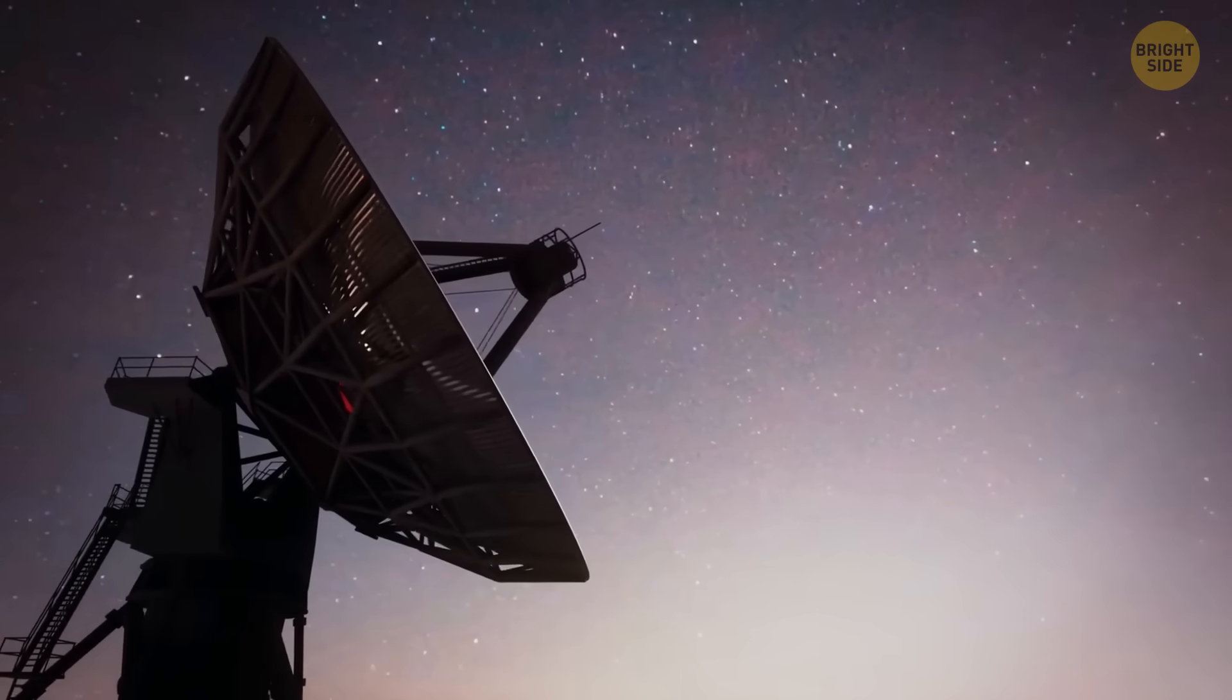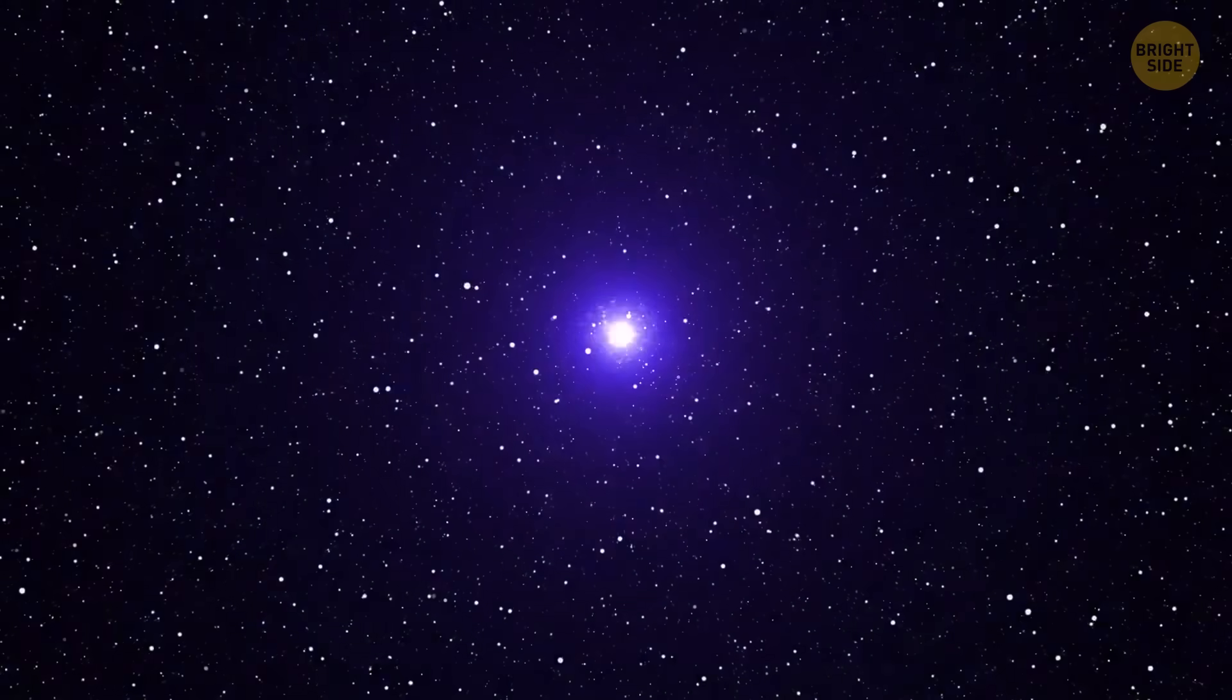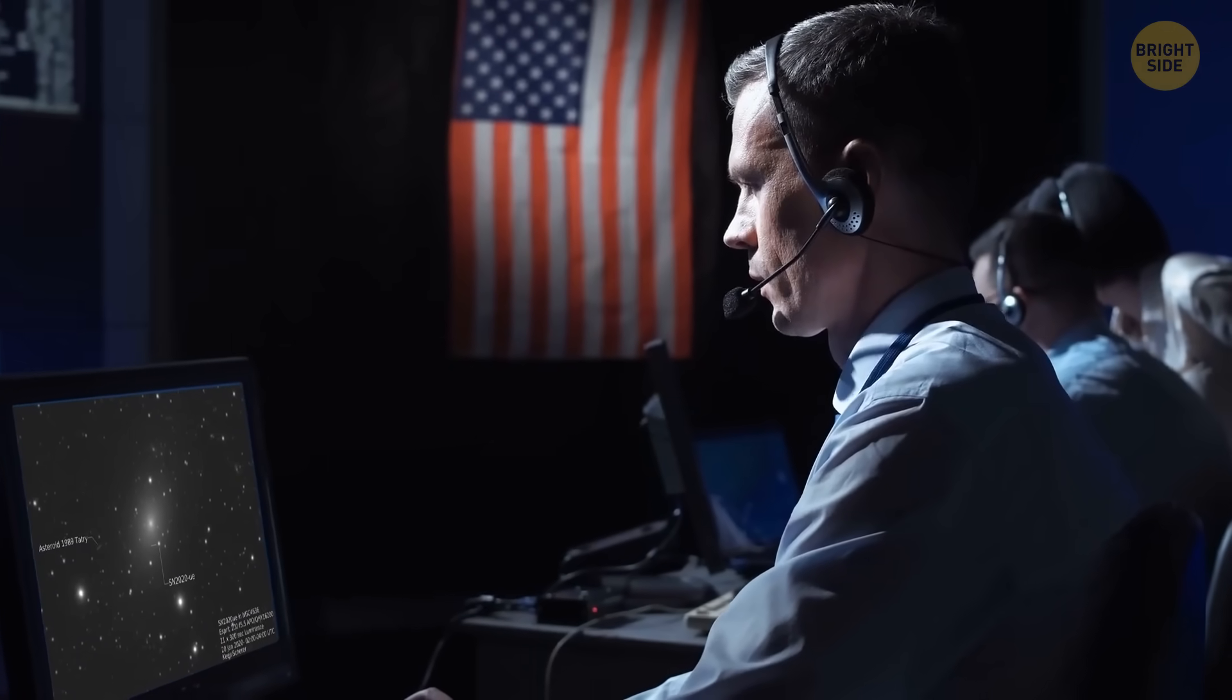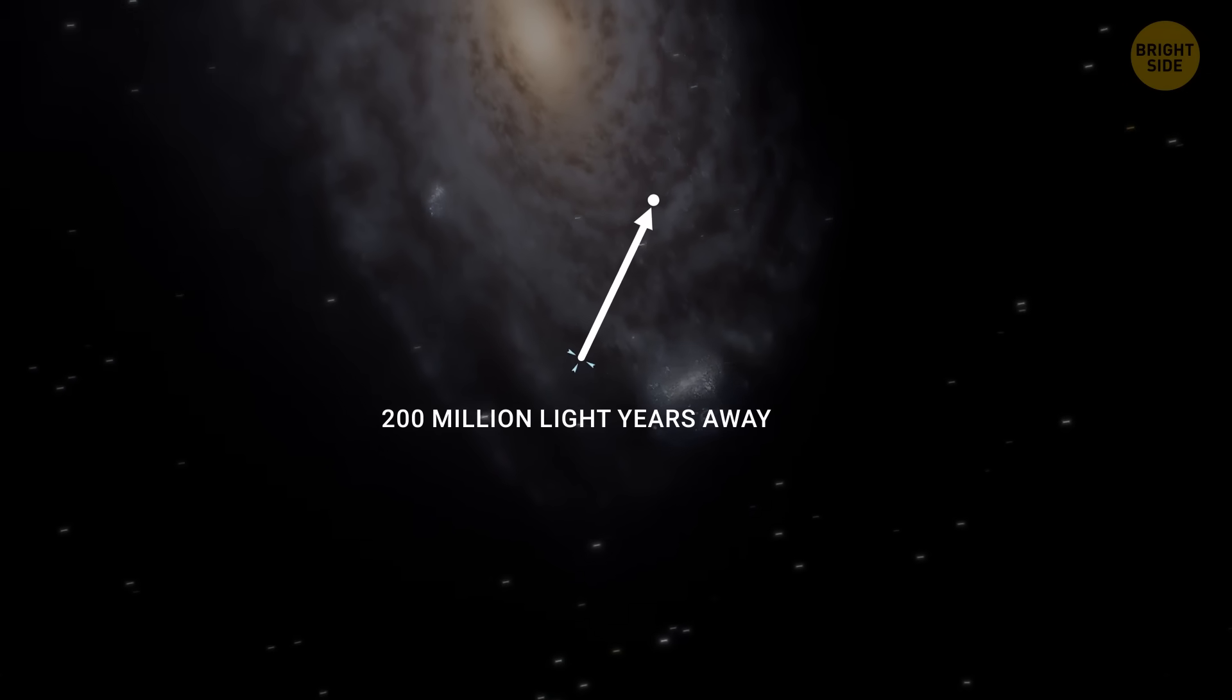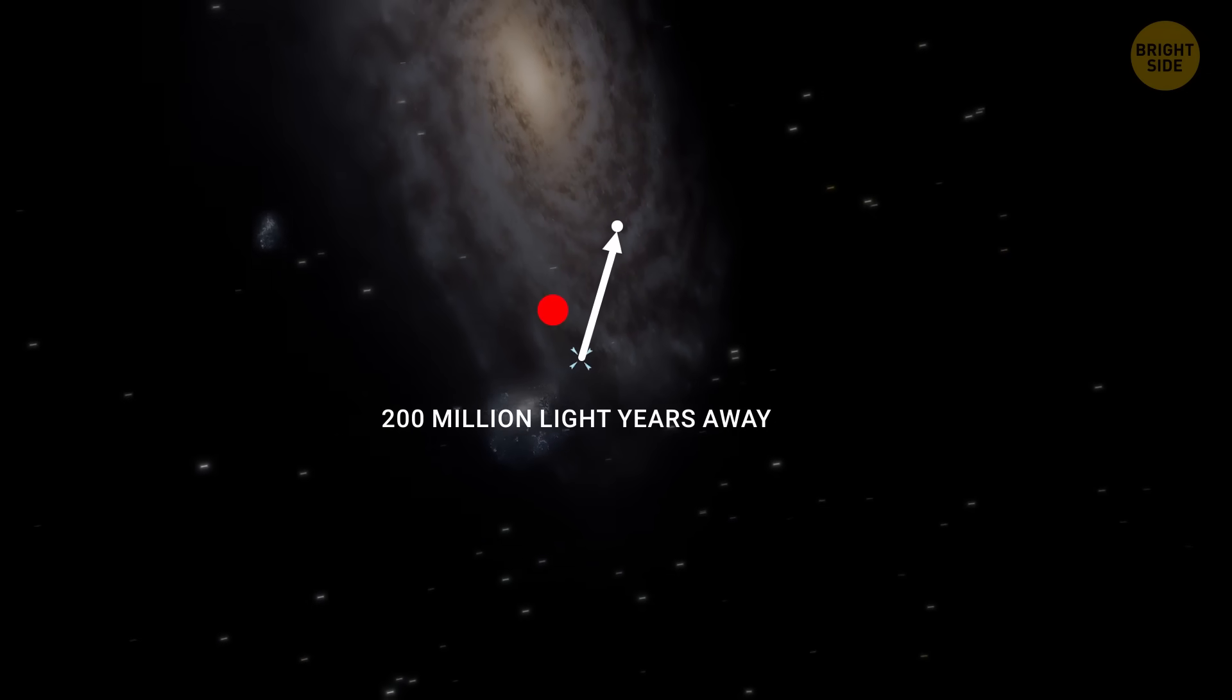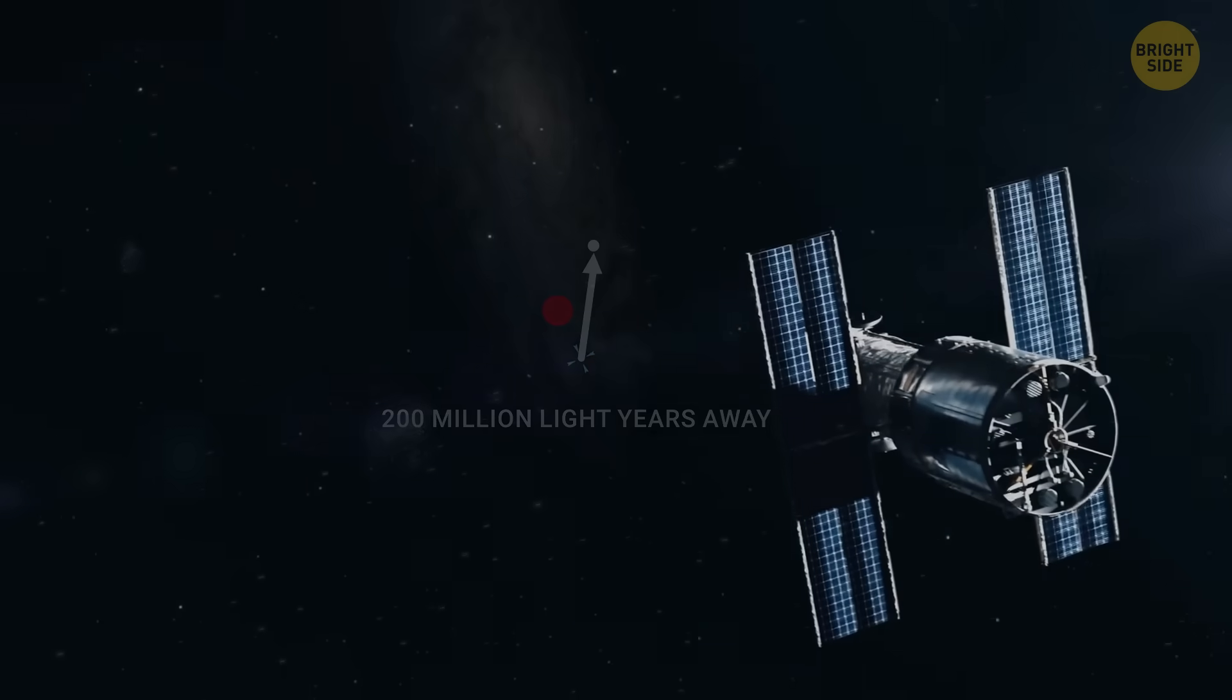Astronomers have spotted about a dozen mysterious explosions in space, and no one really knows what they are or why they're happening. At the moment, they occur about 200 million light-years away. But what if, one day, they get much closer to our planet?